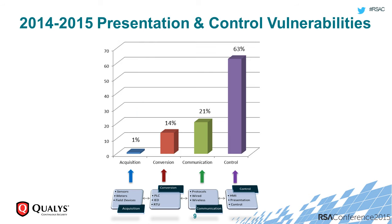So overall, looking at vulnerabilities by these various components for industrial control systems, we found a whopping 63% of vulnerabilities in the control layer, followed by 21% in communication, and very few vulnerabilities in PLCs and IEDs — which are just about 14%.